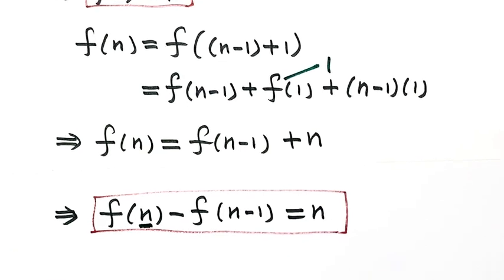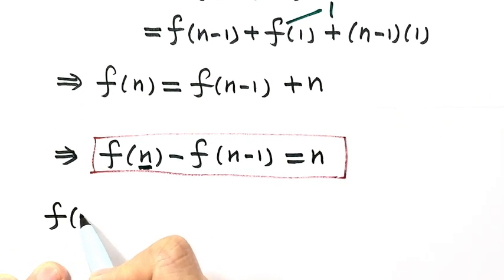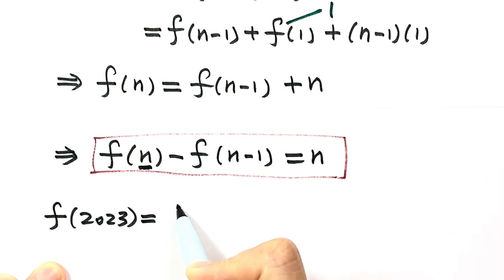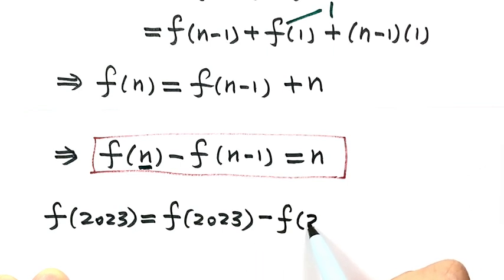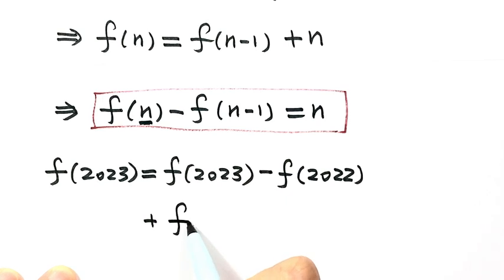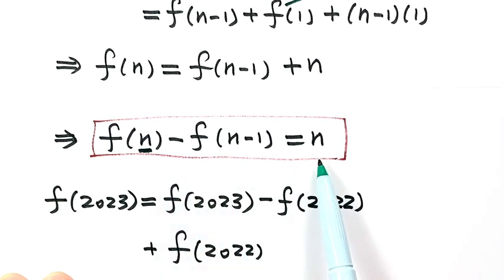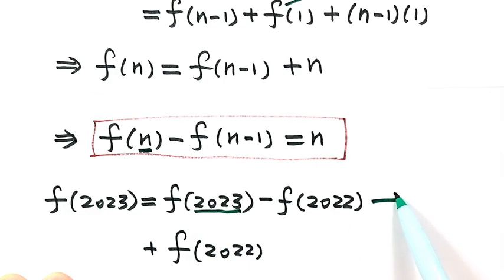Now we're ready to find f(2023). Using the recurrence result f(n) − f(n−1) = n, we write: f(2023) = [f(2023) − f(2022)] + f(2022). Based on our result, f(2023) − f(2022) = 2023. Then we add and subtract f(2021) to continue: f(2022) − f(2021) = 2022.